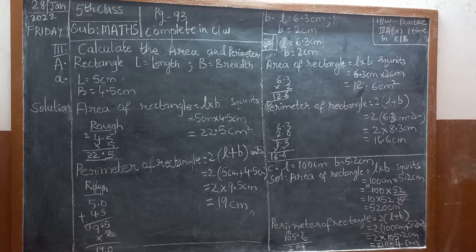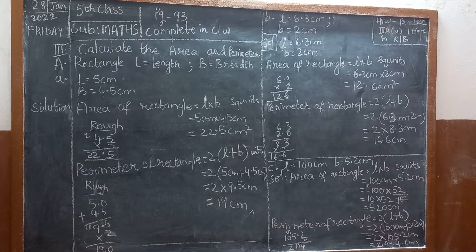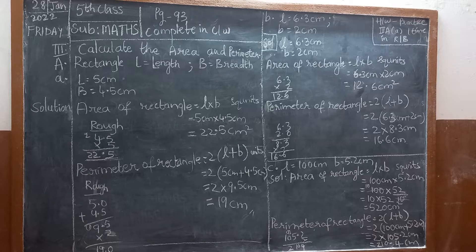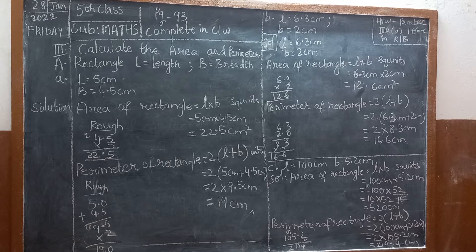Good morning students. Yesterday we did page number 93, second bit. Today we are doing page 93, same third bit — parts A and B. Today is Friday. We are doing area of rectangle and perimeter of rectangle, so do all this in classwork only — do the practice.